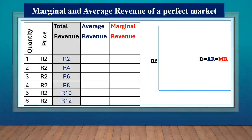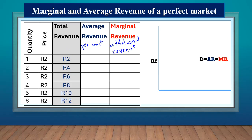For the last slide, we learn how to calculate the average revenue and the marginal revenue. The average revenue is the revenue per unit. To calculate it, take your total revenue and divide by the quantity. So two divided by one is two, four divided by two is two, six divided by three is two, eight divided by four is two, ten divided by five is two, and twelve divided by six is two.